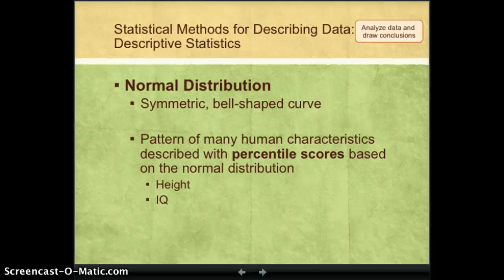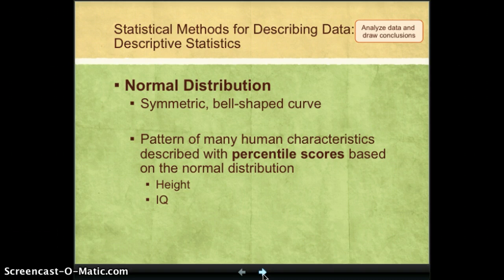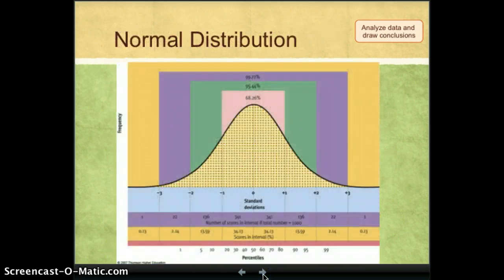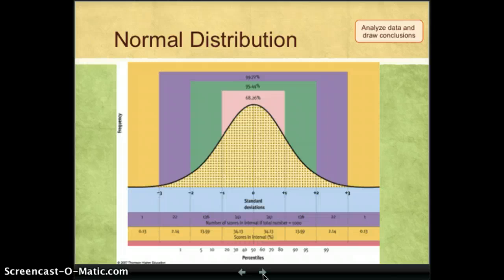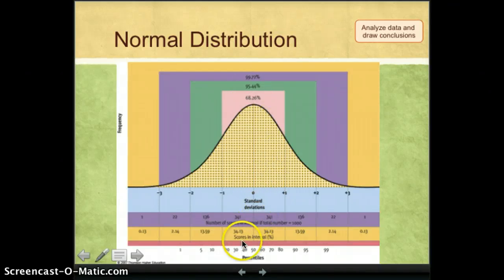And we see characteristics such as human height distributed in the normal distribution. And we see characteristics such as IQ distributed like the normal distribution. The normal distribution has some characteristics that we can look at. In the normal distribution, we call the point where the mean, the median, and the mode all line up on top of each other zero.